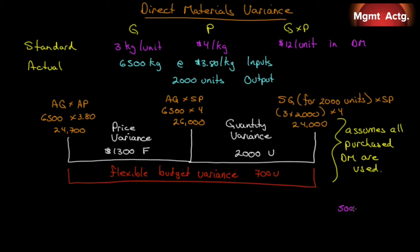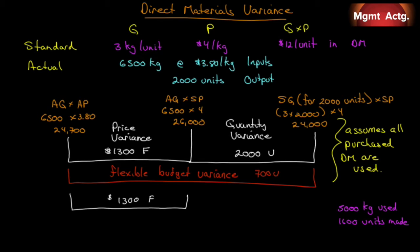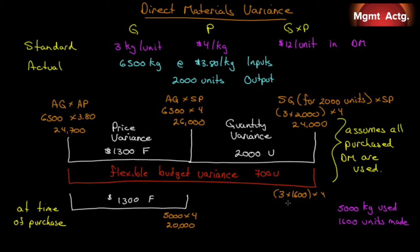Let's say we used 5,000 kilograms instead, and actual output was 1,600 units made. Our price variance is calculated at the time of purchase, so nothing changes — it's still $1,300 favorable. But for the quantity variance, we change the middle row: actual quantity times standard price is 5,000 times $4.00 equals $20,000. Standard quantity for 1,600 units is 3 kilograms times 1,600 times $4.00, which should have cost $19,200. So we're $800 unfavorable, and this is measured at time of use.